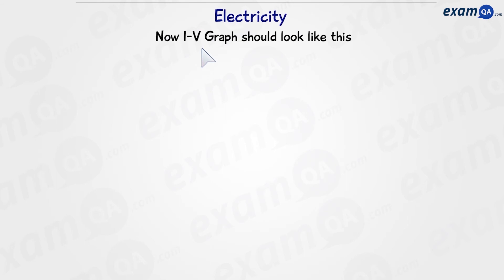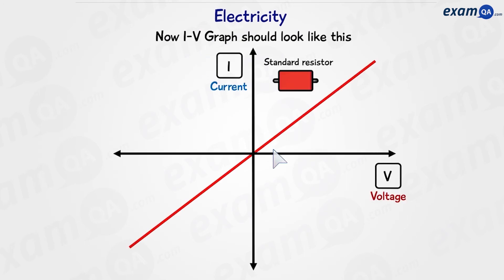Now, our IV graph should look like this. We can see that our IV graph has two lines now, top right and bottom left. This is to indicate the current flowing in both directions. For the standard resistor, we can see that we have a constant gradient, which means constant resistance in both directions.